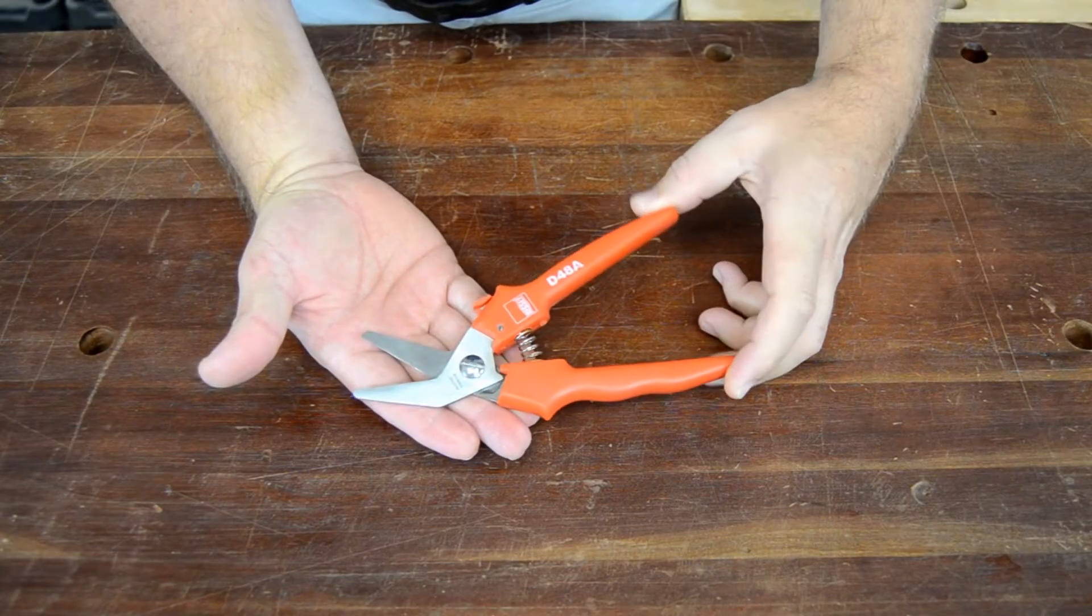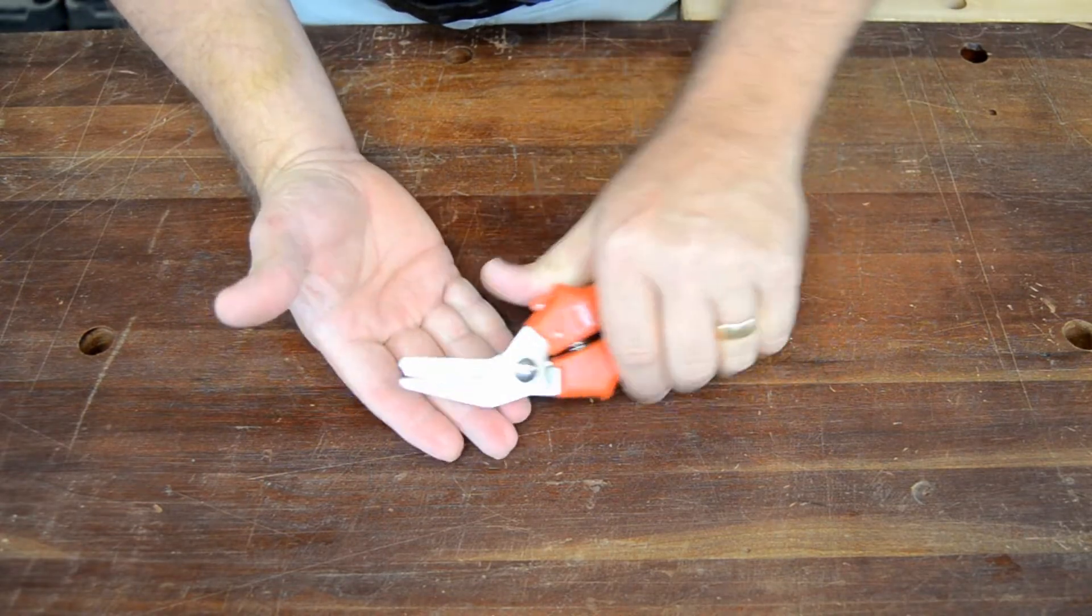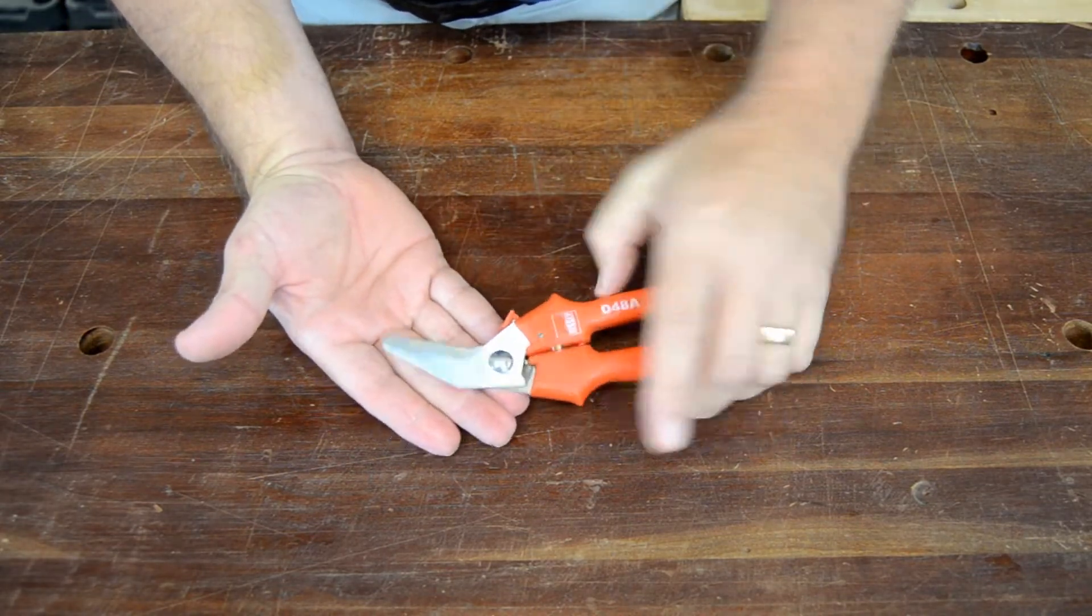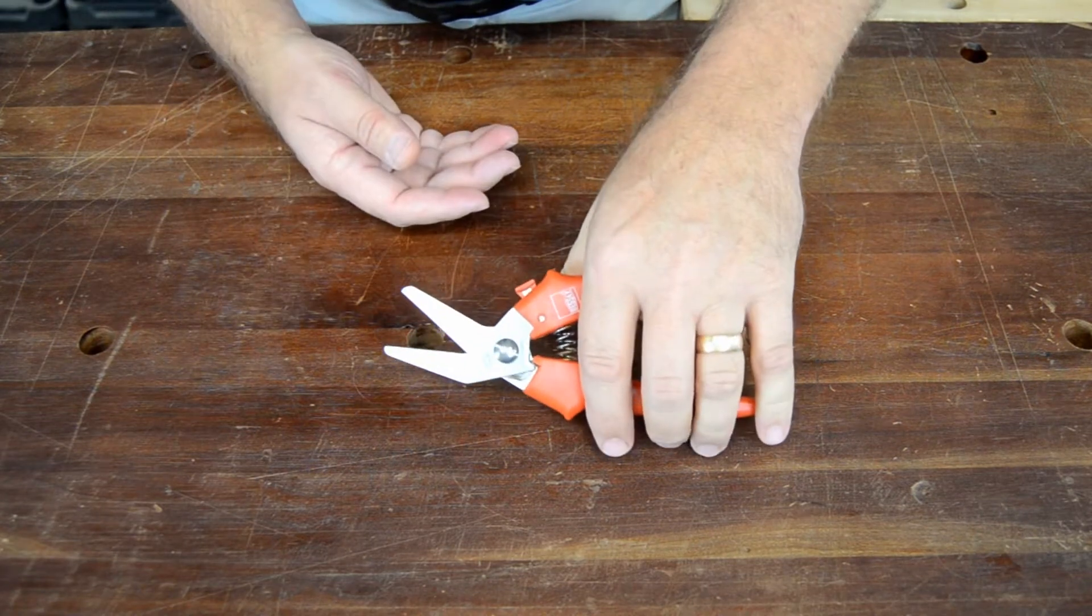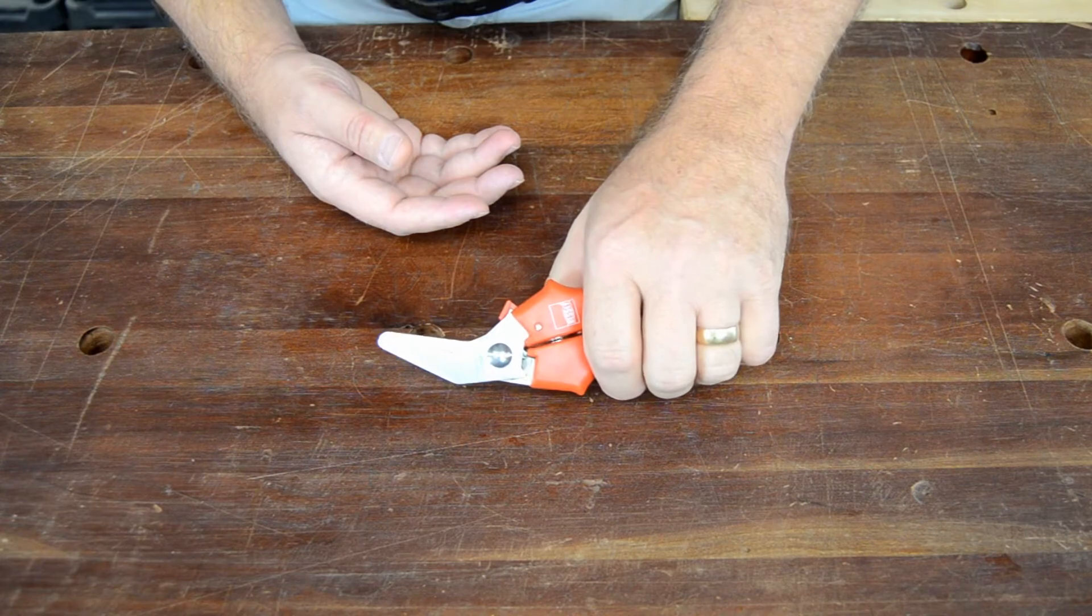All of the multi-snips are spring-loaded for easy use and feature comfortable molded grips. The stainless steel blades remain clean and sharp even with hard use, and safely stay closed with a convenient thumb-operated lock.